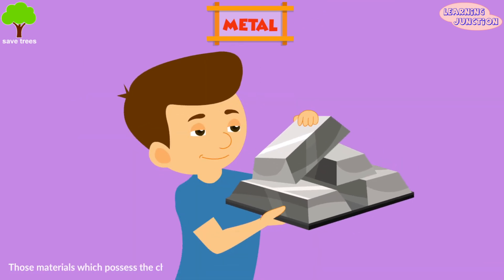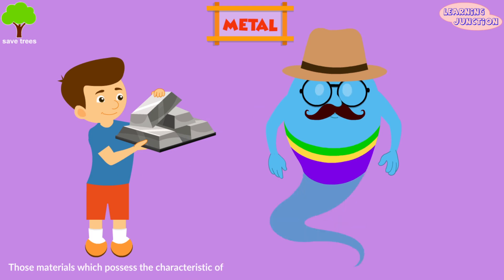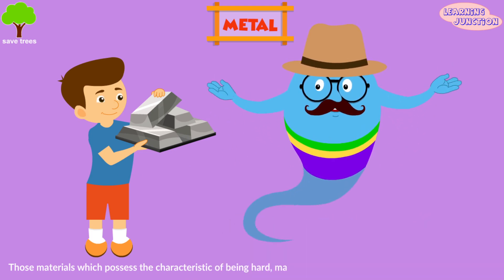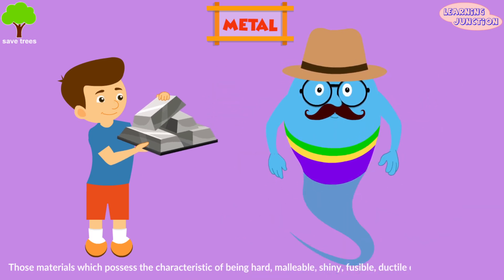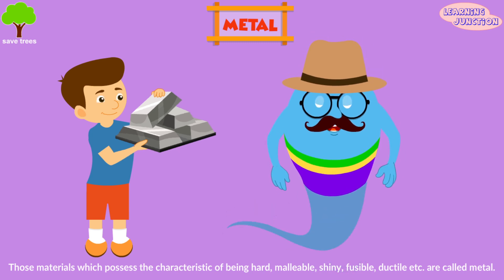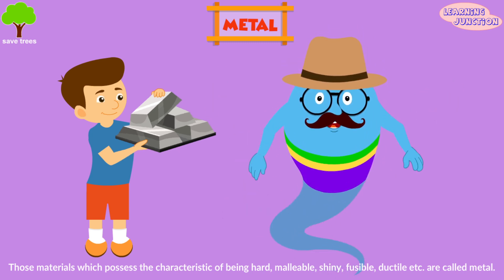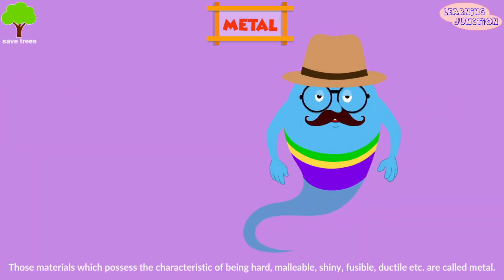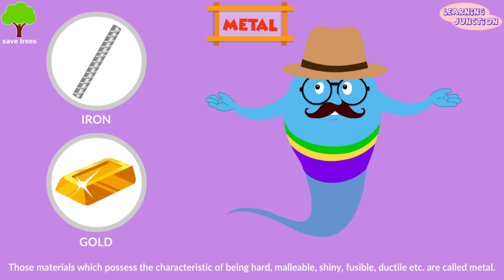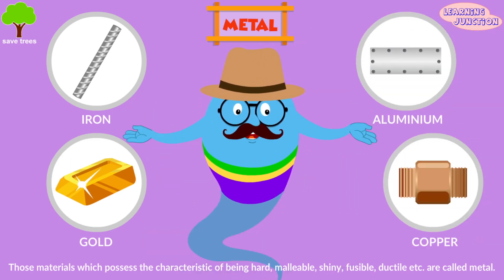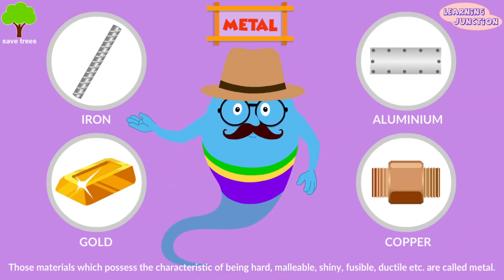Like these metal bars, those materials which possess the characteristic of being hard, malleable, shiny, fusible, ductile, etc. are called metals. For example, iron, gold, aluminium, copper, etc.